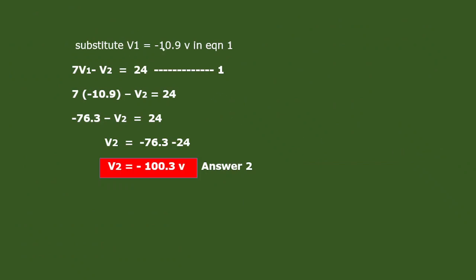Substituting V1 equal to minus 10.9 volts into equation 1 — that is, 7V1 minus V2 equal to 24 — we get 7 times (minus 10.9) minus V2 equal to 24, which gives minus 76.3 minus V2 equal to 24. Therefore V2 equals minus 76.3 minus 24, which is minus 100.3 volts. So we have obtained both answers, V1 and V2.